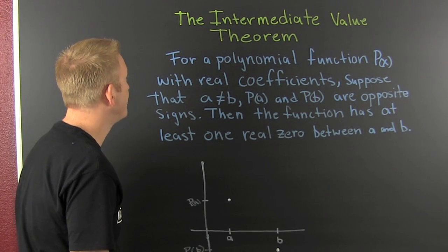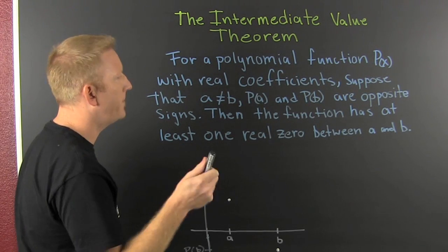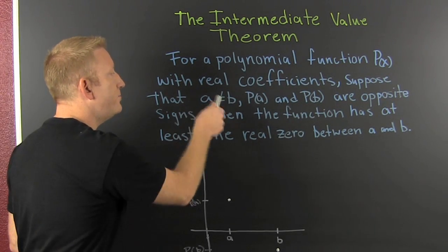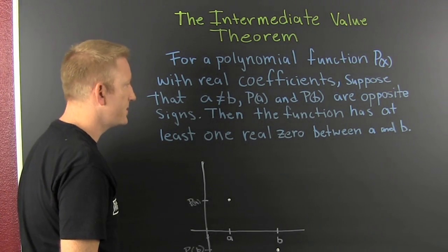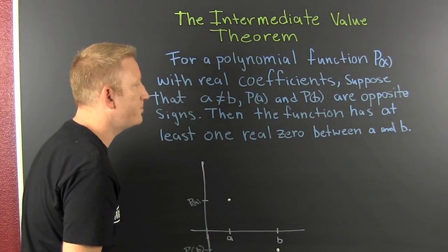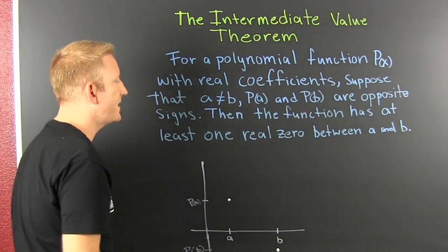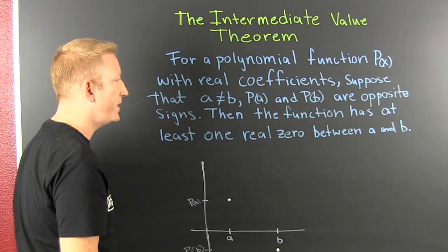The Intermediate Value Theorem for a polynomial function p(x) with real coefficients. Suppose that a and b are not the same, and the signs of p(a) and p(b) are opposite. Then the function has at least one real zero between a and b.